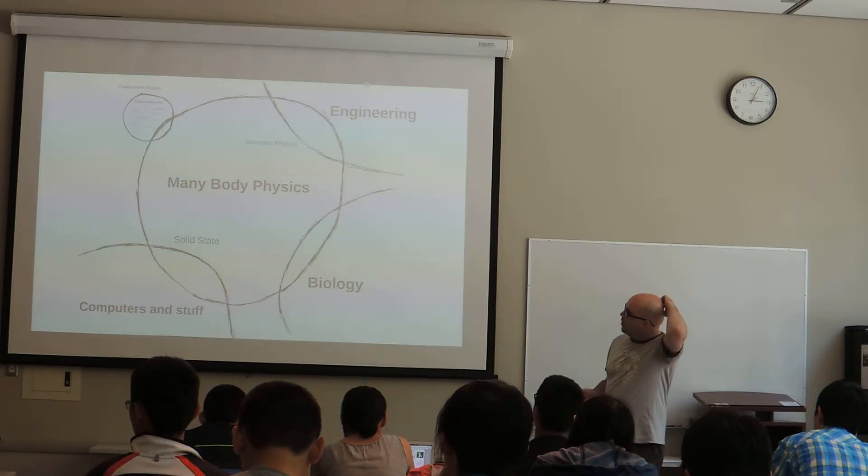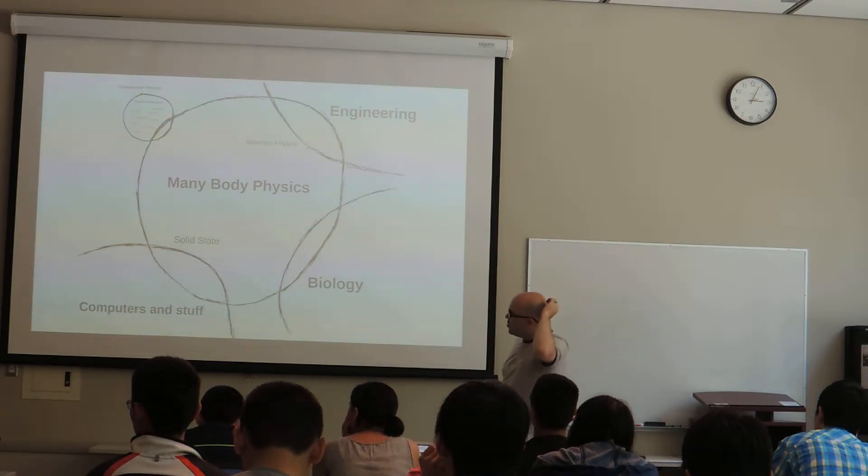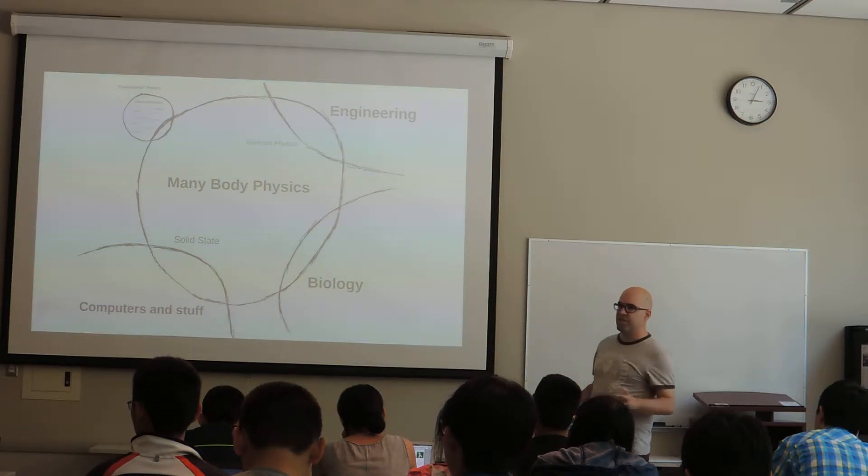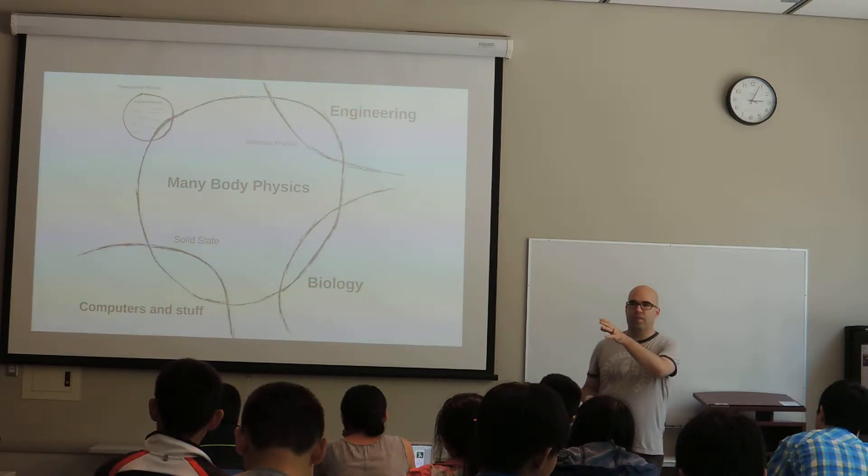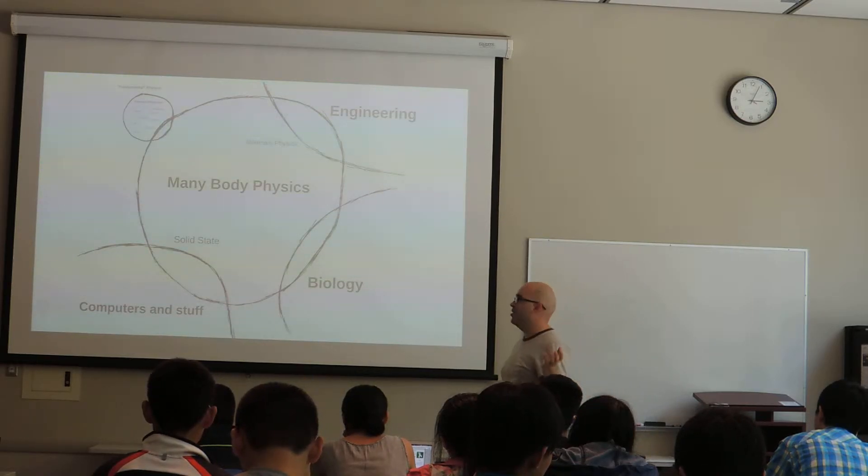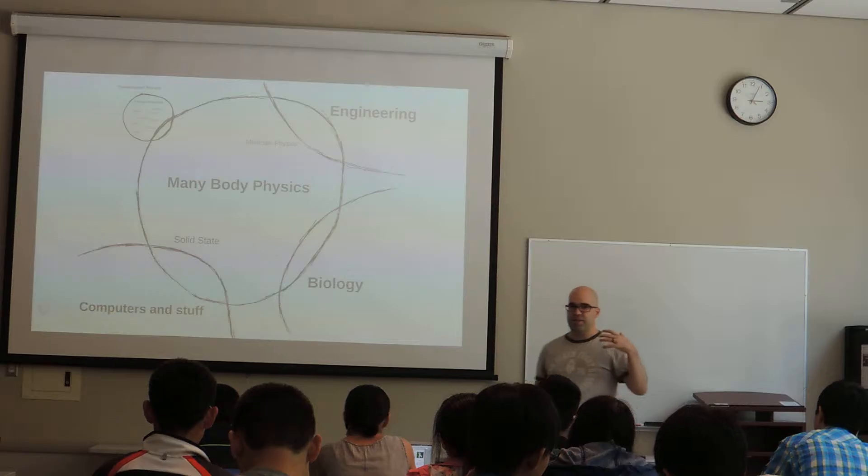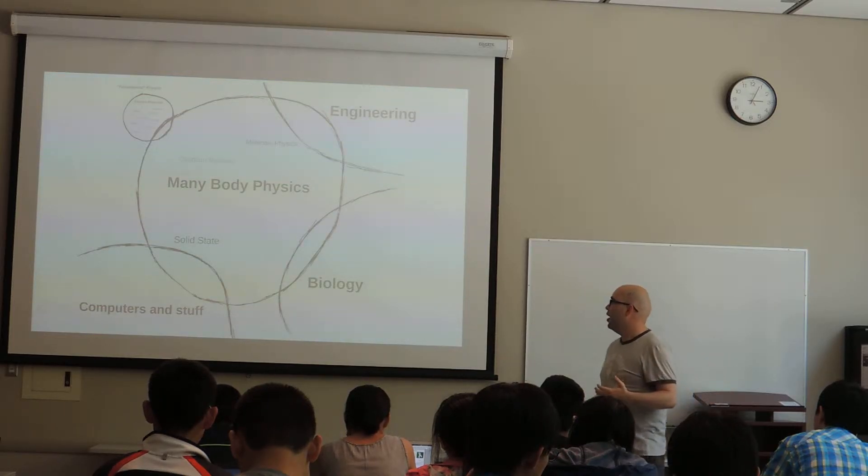So this would cover things like materials physics, it would cover things like solid state physics, and there's a lot of overlap between these areas and other areas. So materials physics kind of, there's a lot of overlap with that in engineering. Someone brought up carbon nanotubes or something in the engineering talk. Solid state physics is, there's a lot of computers and whatnot, so there's a lot of overlap.